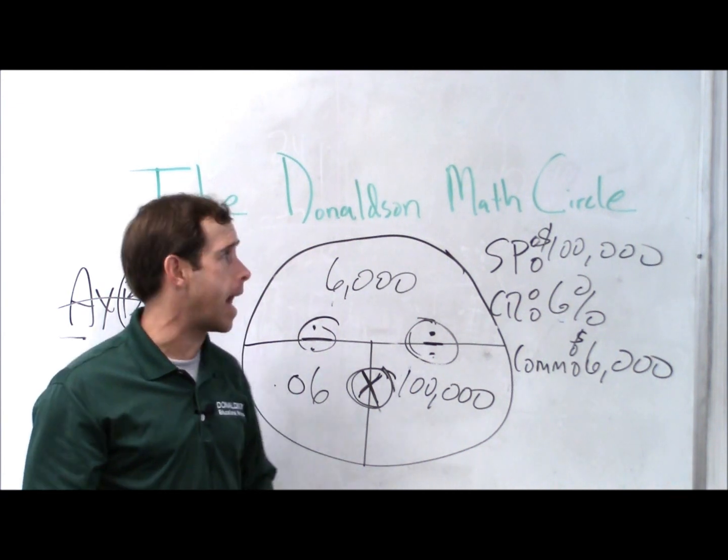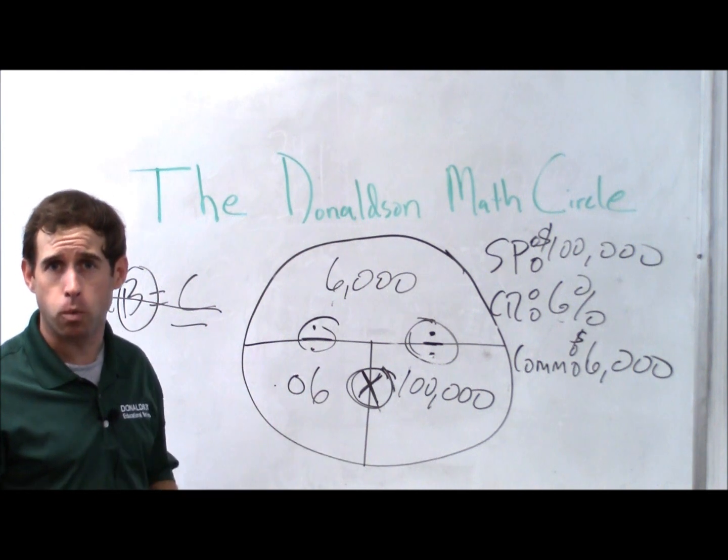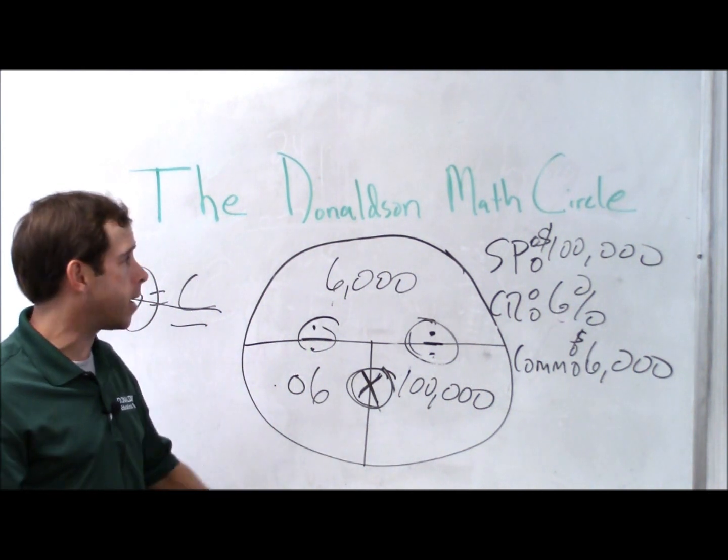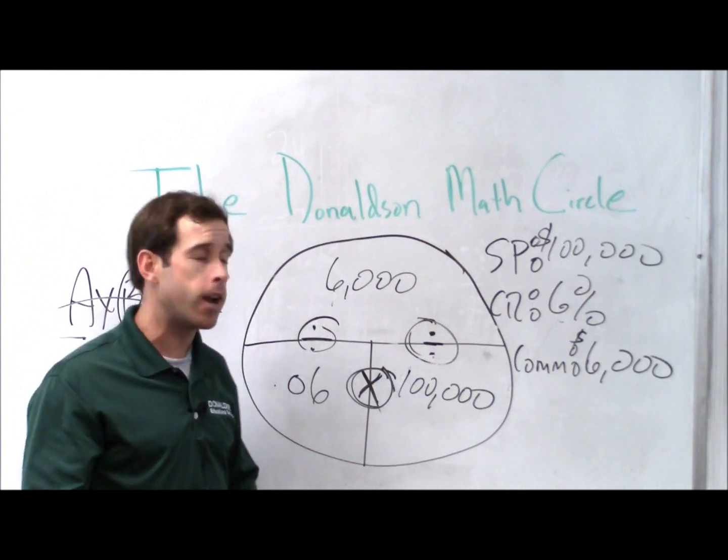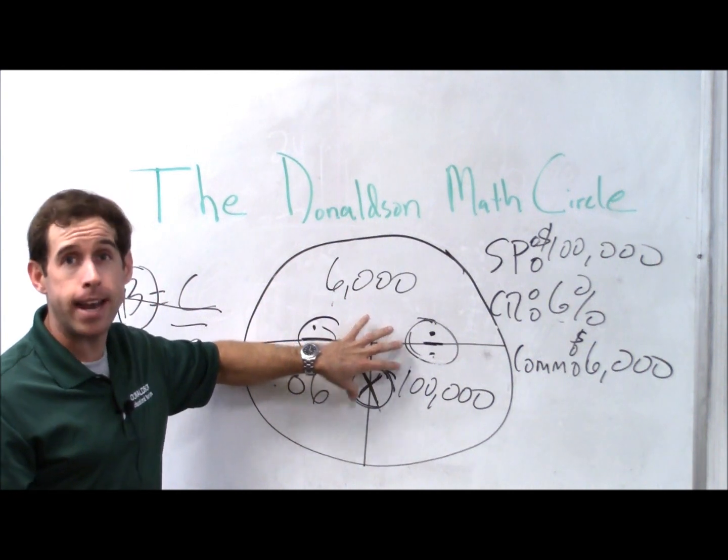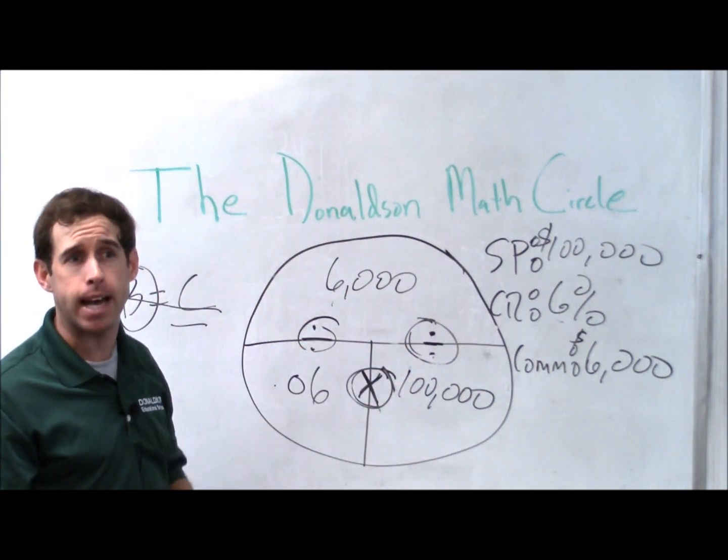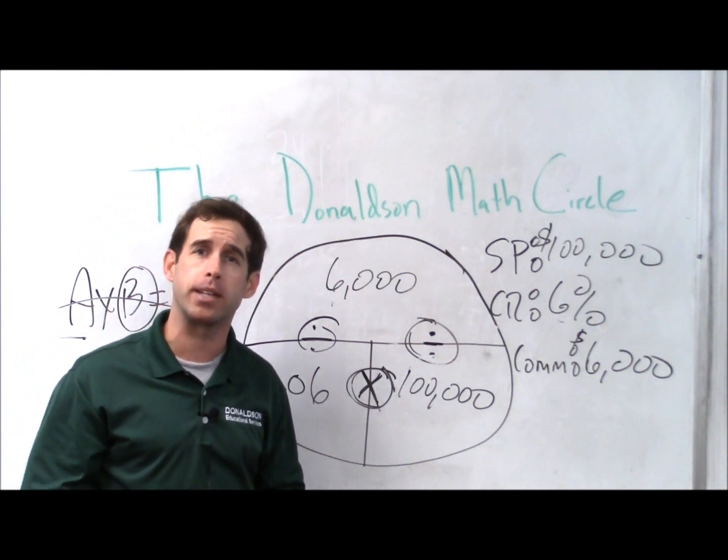So as you can see, the Donaldson math circle is one of the best ways to master the real estate portion of the exam, because it takes lots and lots, dozens really, of formulas that you may have to remember and combines them into one method. And if you take this one method and you do it the same way every time, I think you will have success on the math portion of the real estate exam.